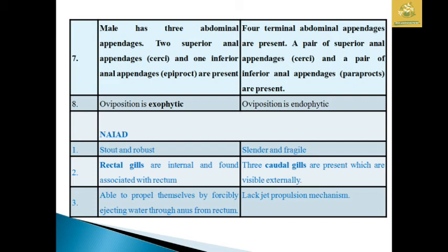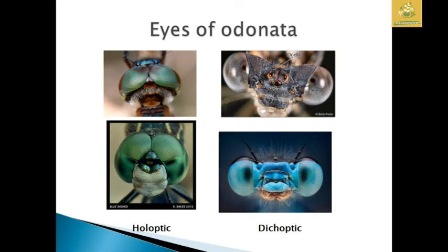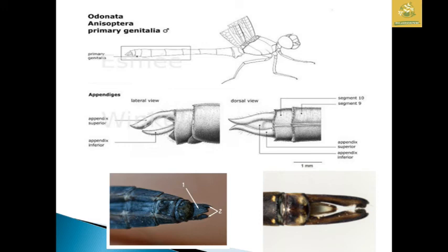The naiads of dragonflies are stout and robust while damselfly naiads are slender and fragile. Dragonfly naiads have rectal gills internally associated with the rectum, and they propel themselves by forcibly ejecting water through the anus. Damselfly naiads have three visible caudal gills. These are the images of dragonfly and damselfly; you can see the holoptic and dichoptic nature of eyes, appendages, and lateral and dorsal views.